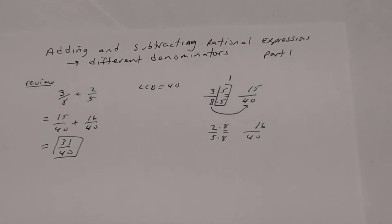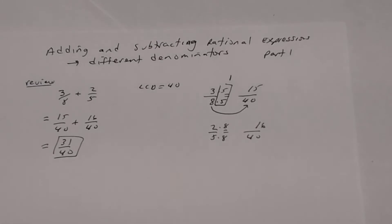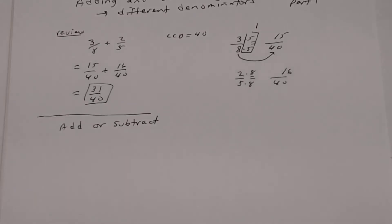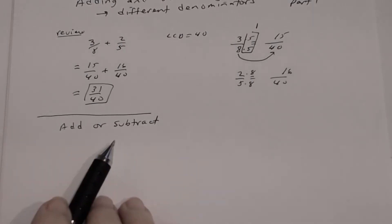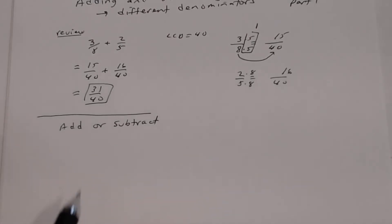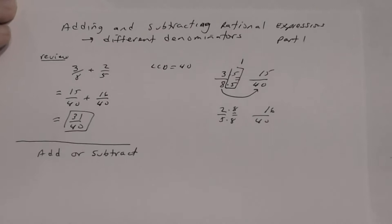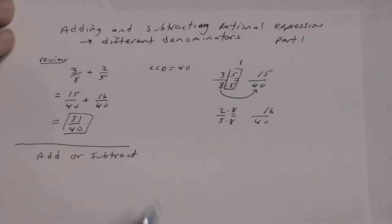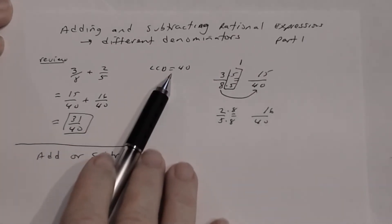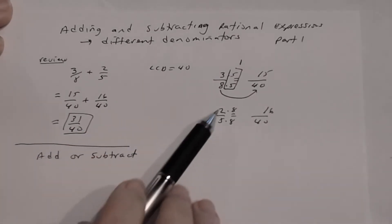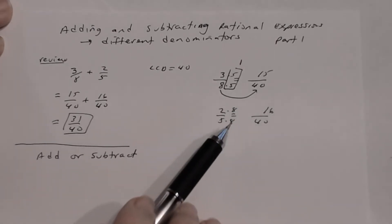You're going to use this same idea with the rational expression problems we'll see next. The directions say add or subtract rational expressions with different denominators. We need to find the least common denominator and write equivalent fractions — that's the process.